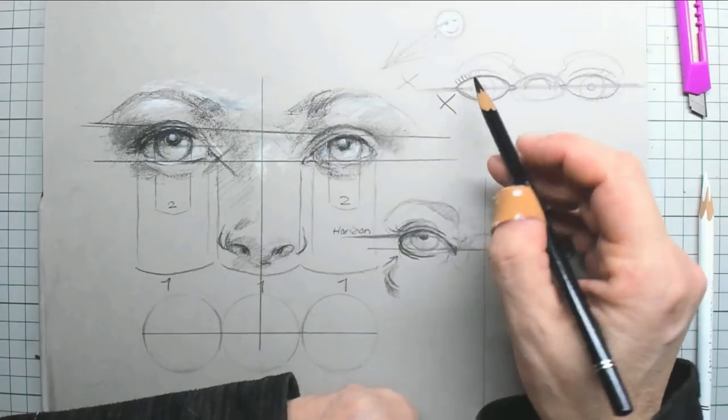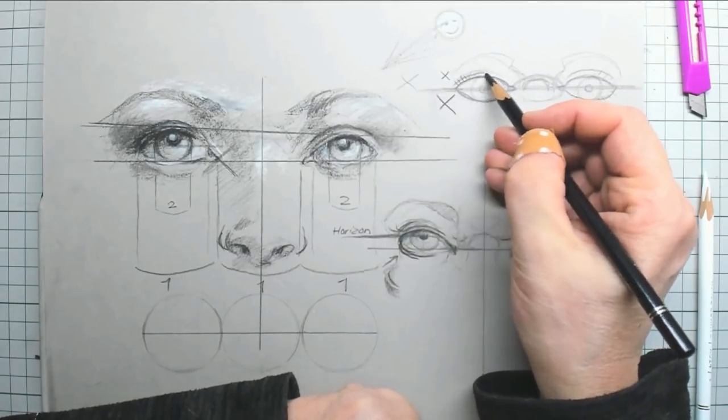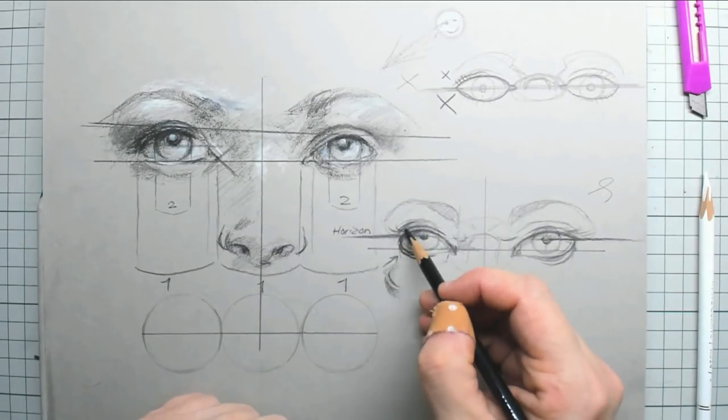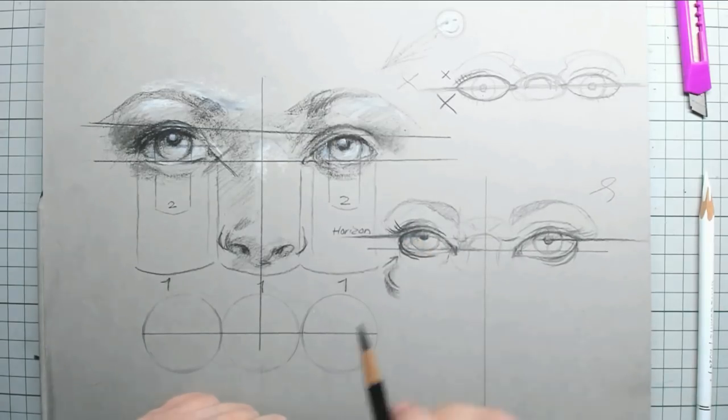That's a mistake too because actually there are two lines and you can see it here. The eyelashes will come out of that second line here.